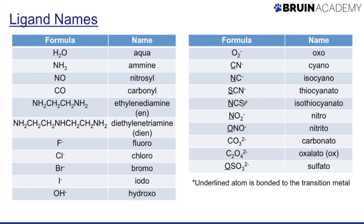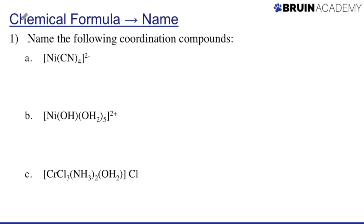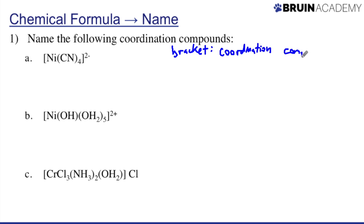The easiest way to learn coordination chemistry is to practice and do problems — at first with the tables in front of you, then without. Let's go from chemical formula to name, which is a bit easier than the reverse. Starting with nickel with four CN ligands and an overall charge of minus two: focus on what's in the brackets — that's your coordination compound. The metal is nickel; when naming, you start with the ligand. CN is called a cyano group.